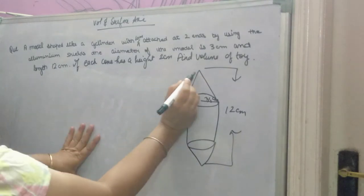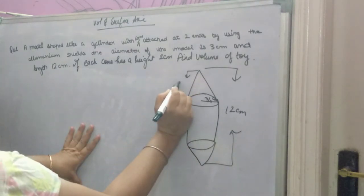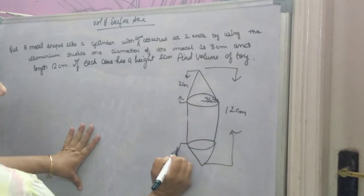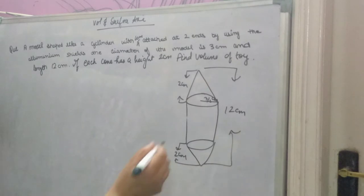Each cone has height 2 cm. Find the volume of the model. Very important question, see carefully.